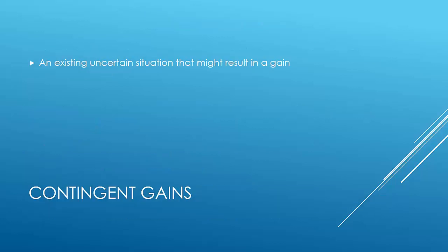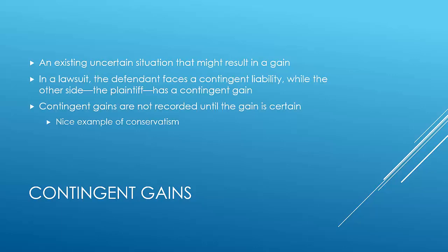The last topic is contingent gains. Recall contingent losses — a potential loss recorded or footnoted in financial statements. A contingent gain is an uncertain situation that might result in a gain, such as potentially winning a lawsuit. However, as conservative accountants, we do not record or footnote a contingent gain until it is certain — unlike contingent losses which are recorded when probable. We might record a potential loss but not a potential gain.